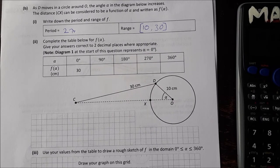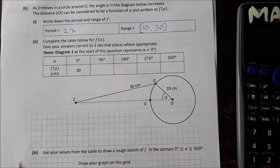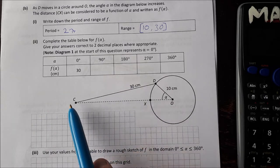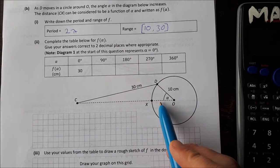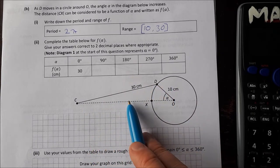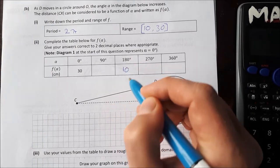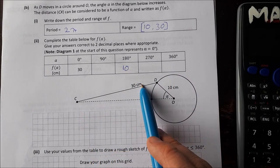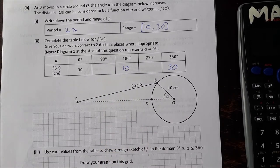Part 2 asks you to complete the table below for F of A, give your answers correct to two decimal places where appropriate. Note diagram 1 at the start of this question represents alpha equal to 0 degrees. There's a couple of ones in here that are easy enough to figure out and then two of them that will take a little bit of work. When alpha is 180 degrees that would be all the way over here. That would mean that we have CD which is 30, 20 of it is the diameter of the circle, so that leaves 10 left. At 360 degrees that's when D is all the way down here so CX is obviously going to be 30.